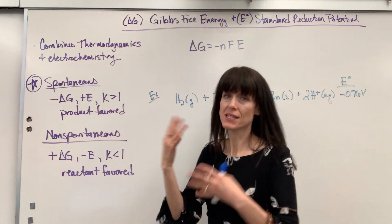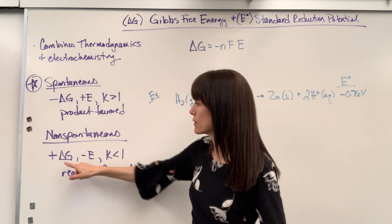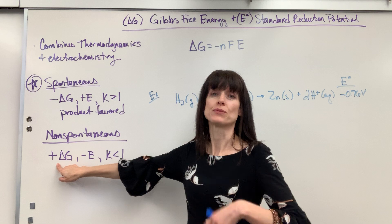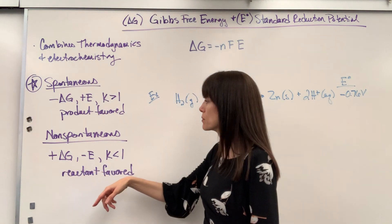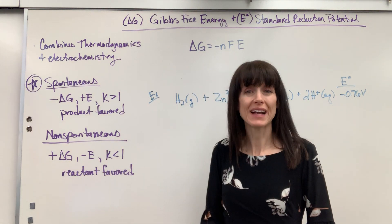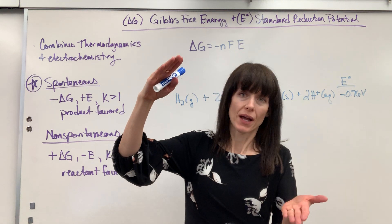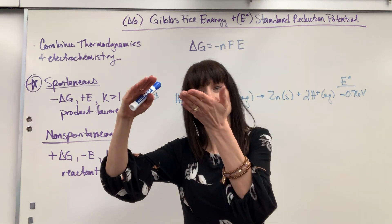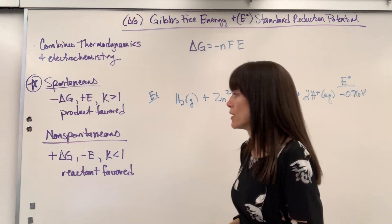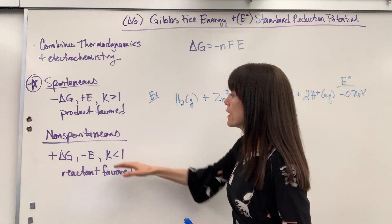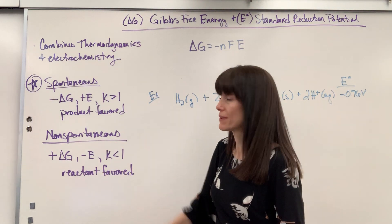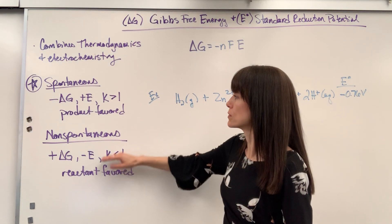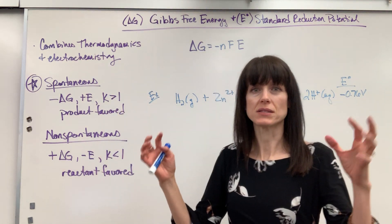A non-spontaneous scenario is going to be positive delta G, requires energy to do work, negative E so a negative potential means that we have to force and move the electrons back up a potential. K is less than 1 which means its reactant favored.